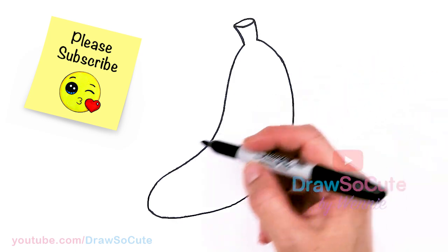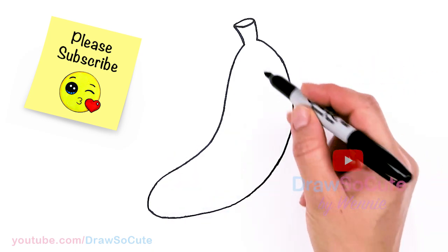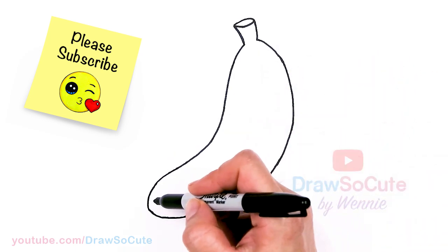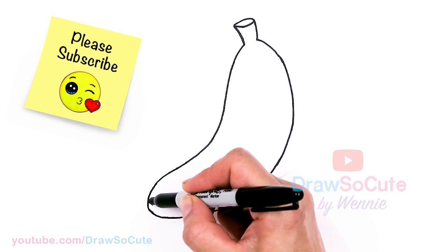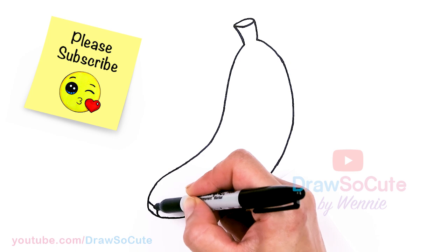Then from there, what makes it a banana, right? It's this line that comes through. But before I do that, I forgot, let's come right here and just going to kind of follow this curve right here to create the end of my banana.